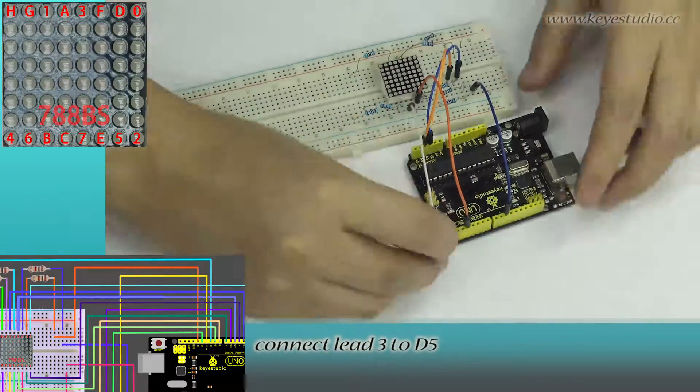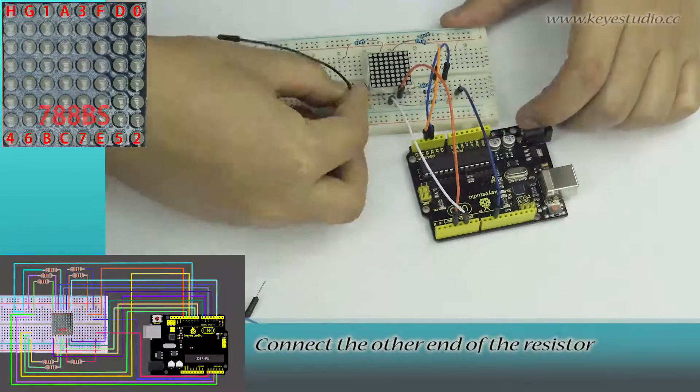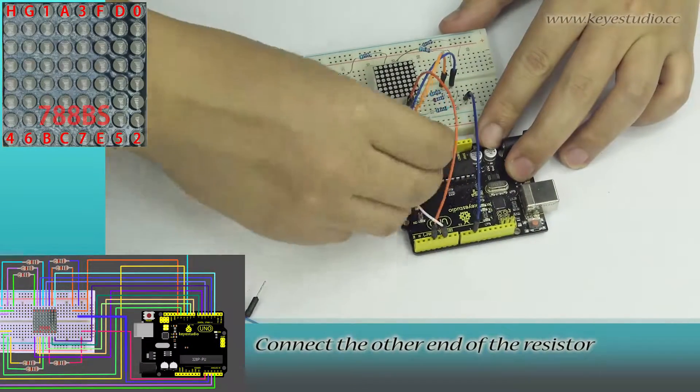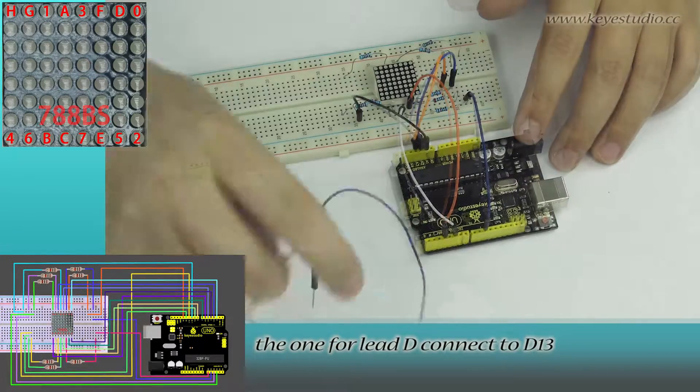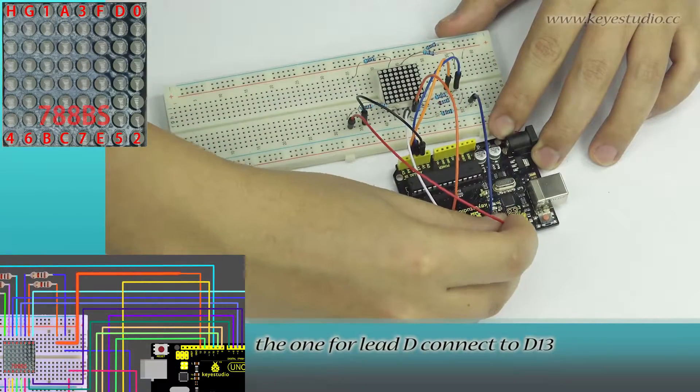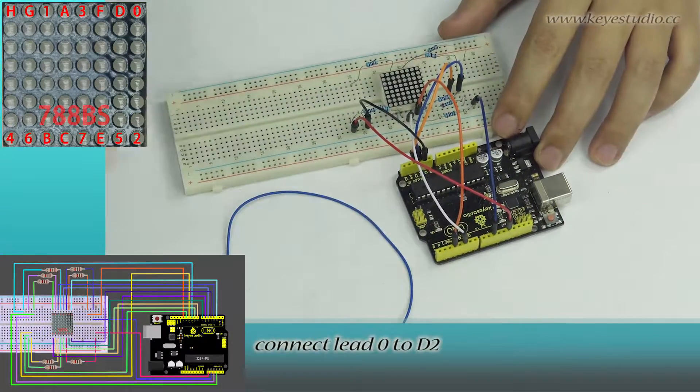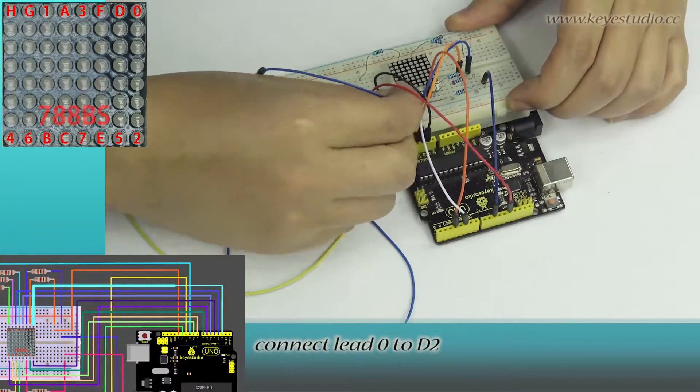Connect the other end of the resistor for lead F to A1, the one for lead D connects to D13, connect lead 0 to D2.